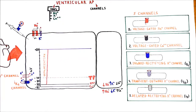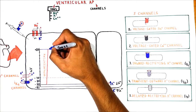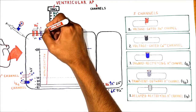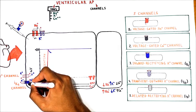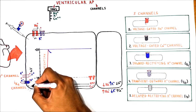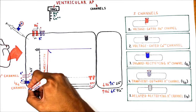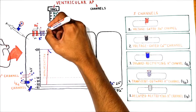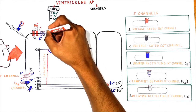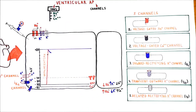When voltage-gated sodium channels close in response to depolarization, transient outward potassium channels (ITO channels) open up and a small amount of potassium leaves the cell. This transient potassium efflux makes the membrane potential dip down slightly, then the channel quickly closes. It is very important to note that inward rectifying potassium channels (IK1 channels), which were open under resting conditions, close near the end of depolarization. Then delayed rectifying potassium channels (IK channels) open and potassium leaves the cell.